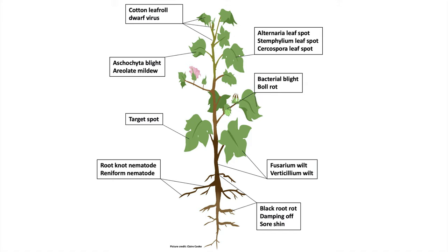I will be discussing cotton foliar, leaf, stem, and boll diseases. We already covered seedling diseases in the prior section. In this section, we will look at diseases that affect the leaves, stems, flowers, and bolls. An important diagnostic tool when determining what disease is in the field is where the disease is located on the plant. The diagram shown here gives the general location for the most common diseases that we have in Tennessee cotton.